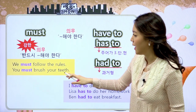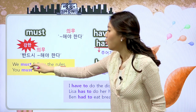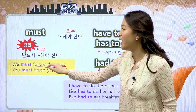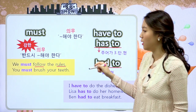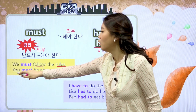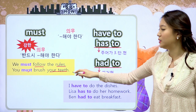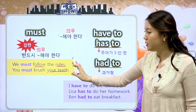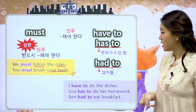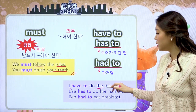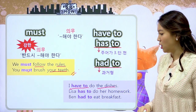예문을 한번 보겠습니다. 'We must follow the rules' 하면 우리는 그 규칙을 꼭 반드시 따라야만 해, 라고 아주 강하게 절대로 하지 않으면 안 돼라는 뜻이고요. 'You must brush your teeth' 하면 너는 양치를 해야만 해, 라고 반드시 해야만 한다는 것을 이야기해줍니다. 'I have to do the dishes' 하면 나는 설거지를 해야만 해라는 뜻이에요.